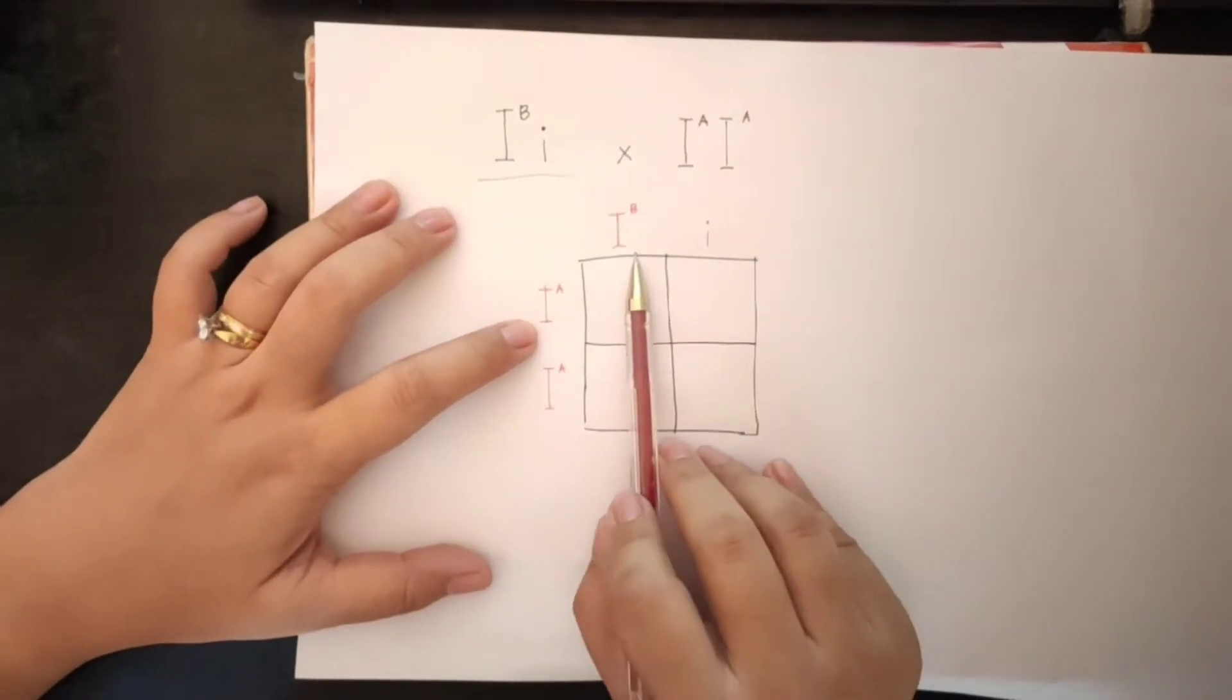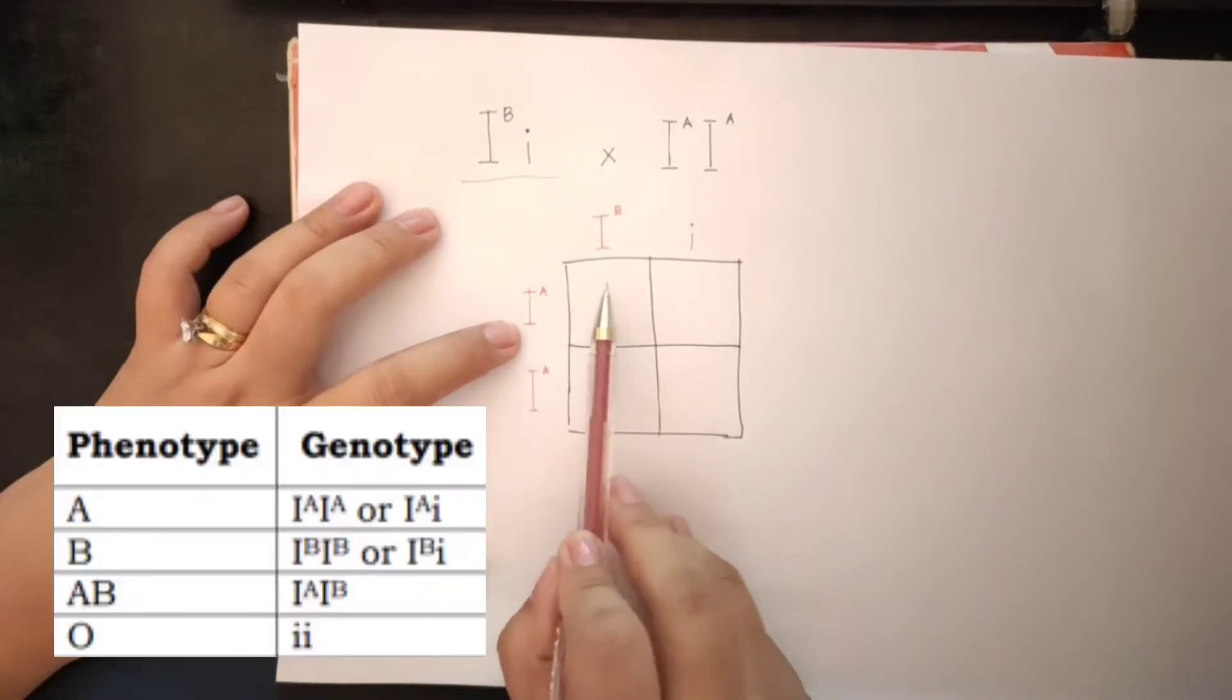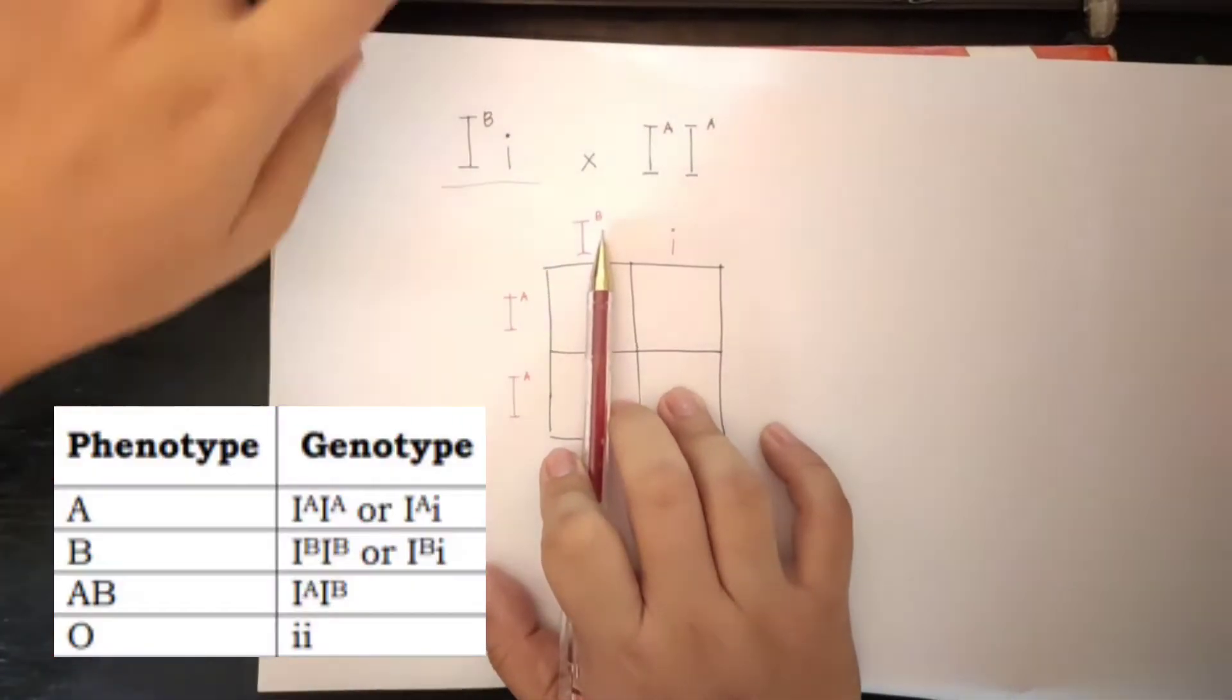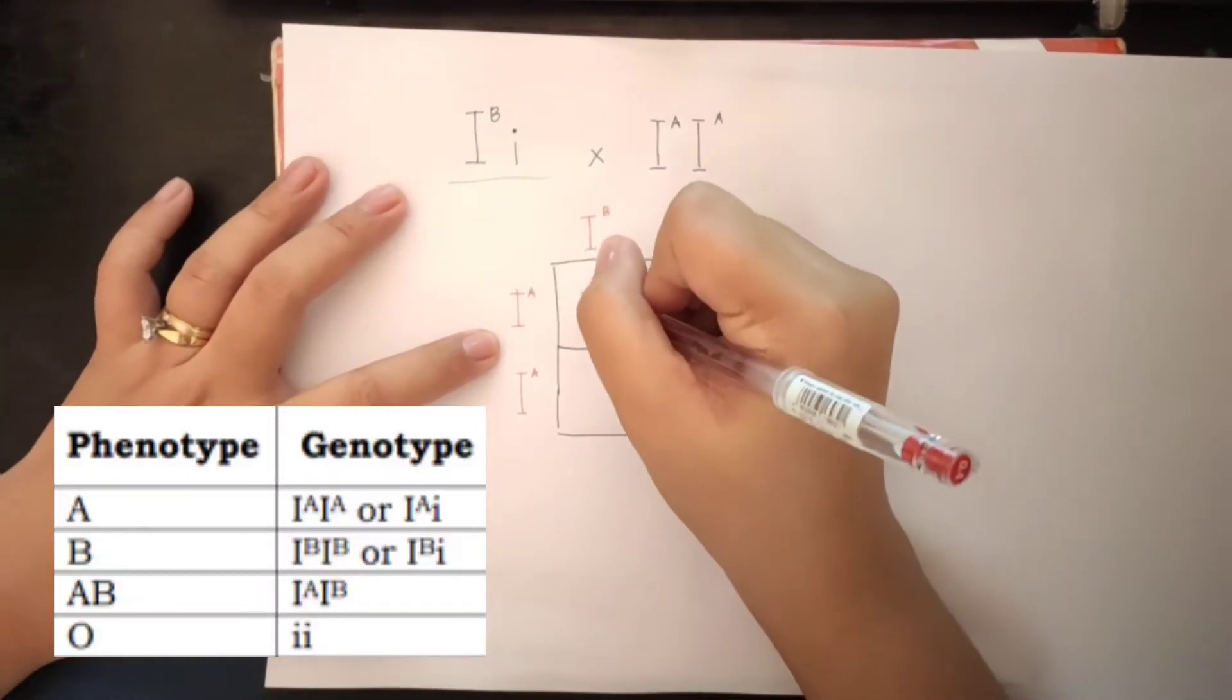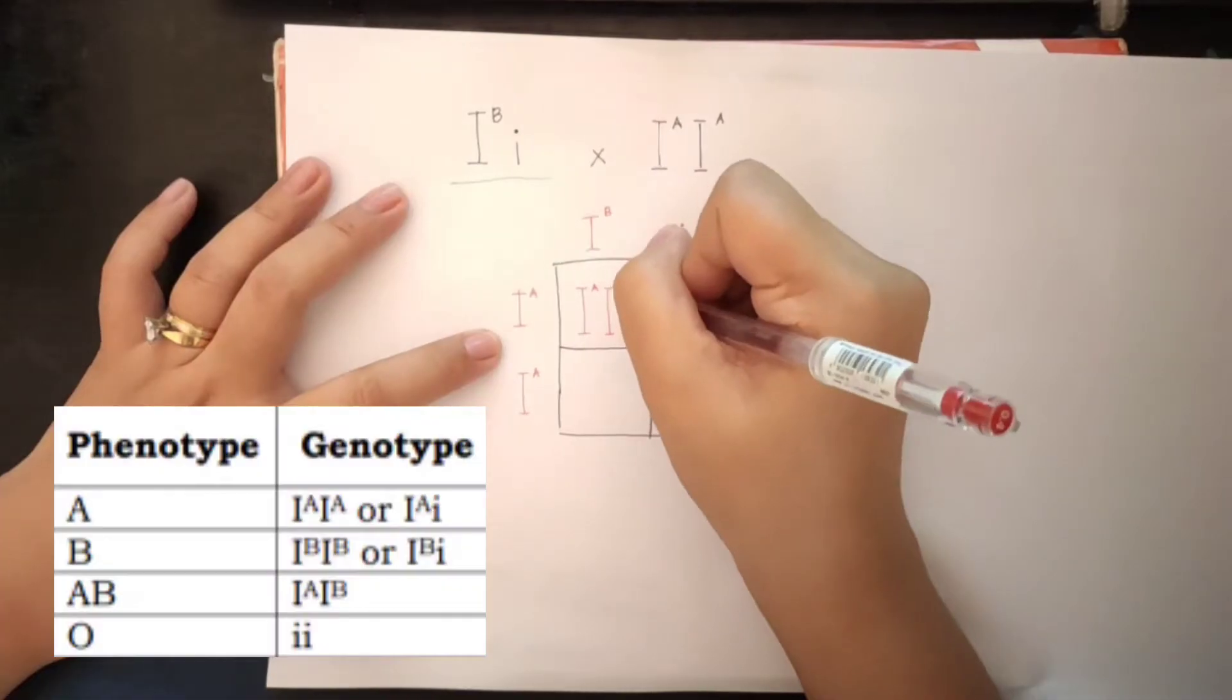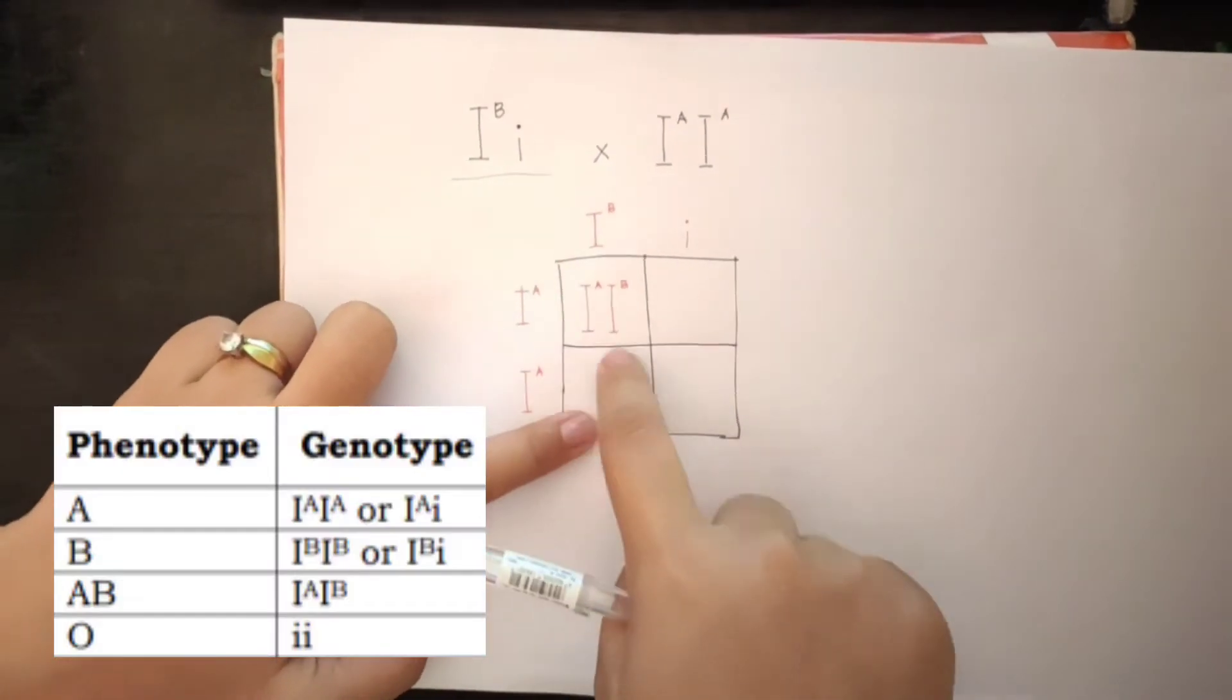Now, take note. This is B and this is A. So, we are going to follow the pattern that if the B will be crossed with the A, we are going to write first the A since this is a genotype for a blood type AB. So, this is the answer for this cross.